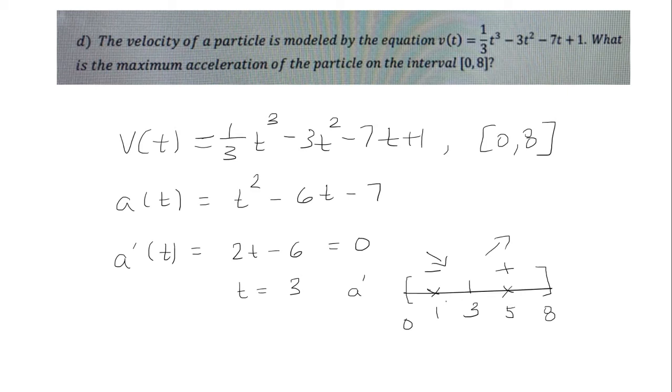So what that leaves us to do is plug in the endpoints. So let's compare when we plug in t equals 0 and t equals 8. If t equals 0, we have 0 squared minus 6 times 0 minus 7, that's negative 7.